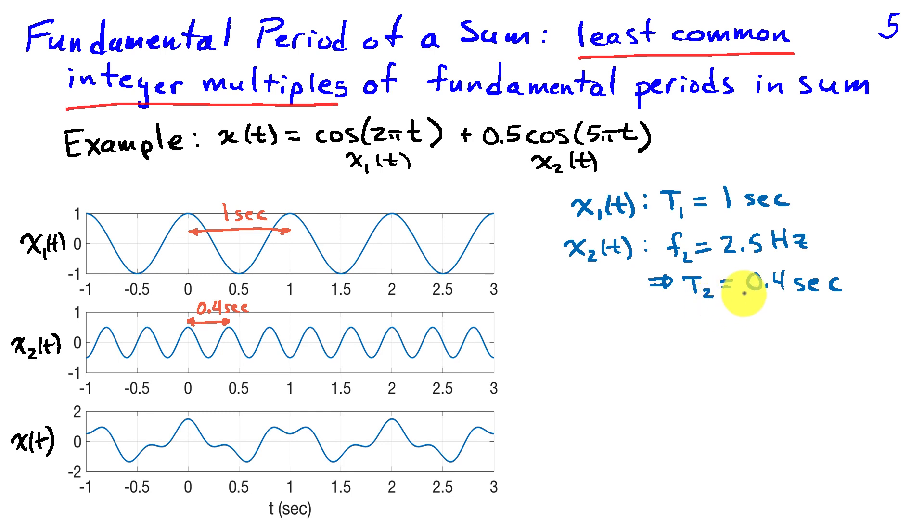Because that would be 2 pi times 2.5 t, and that implies the fundamental period is 1 over f2 or 0.4 seconds as I've sketched on the middle graph. So the fundamental periods of x1 and x2 are different.